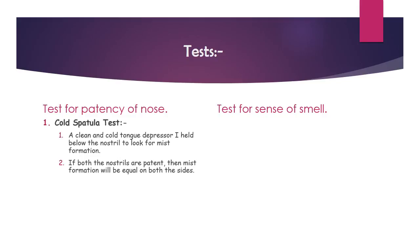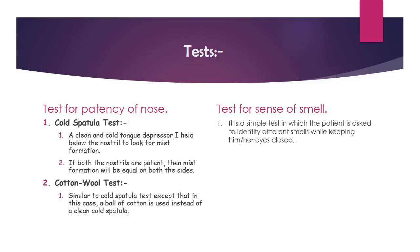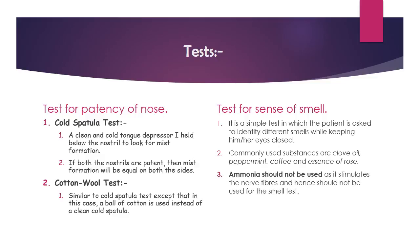Test 1 — Cold spatula test: a clean cold tongue depressor is held below the nostril to look for mist formation. If both nostrils are patent, mist formation will be equal on both sides. Test 2 — Cotton wool test: similar to the cold spatula test, except a ball of cotton is used instead. For the sense of smell test, different solutions are placed in front of the patient's nose with eyes closed, asking them to identify the smell. Commonly used substances are clove oil, peppermint, coffee, and essence of rose. Ammonia should not be used as it stimulates nerve fibers and is therefore not suitable for the smell test.